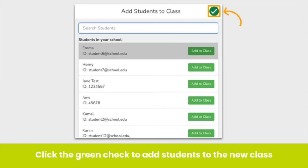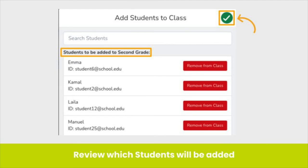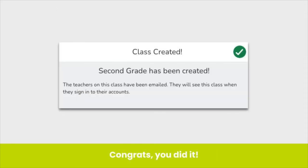When you have added all of the students, click the green check to review. Take a moment to review which students will be added to your new class, and when you have checked that the list is accurate, click the green check. Congratulations! You have created a new class in Seesaw. The teachers you added will receive an email about their new class and will also see the class when they log in to their Seesaw teacher account.